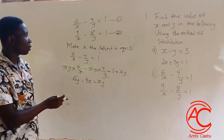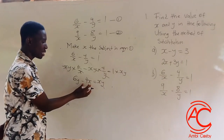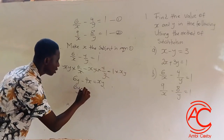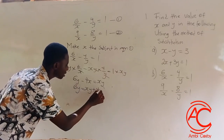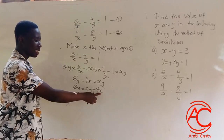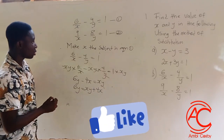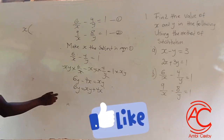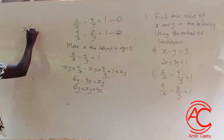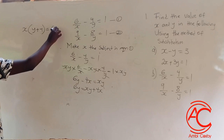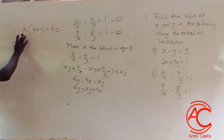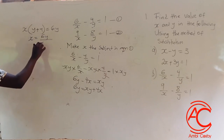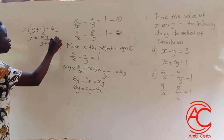Now we want to make x the subject. We transpose minus 4x to the right side: 6y is equal to xy plus 4x. We can factorize x out: x times (y plus 4) is equal to 6y. Dividing both sides by (y plus 4), we get x is equal to 6y over (y plus 4). This becomes equation 3.